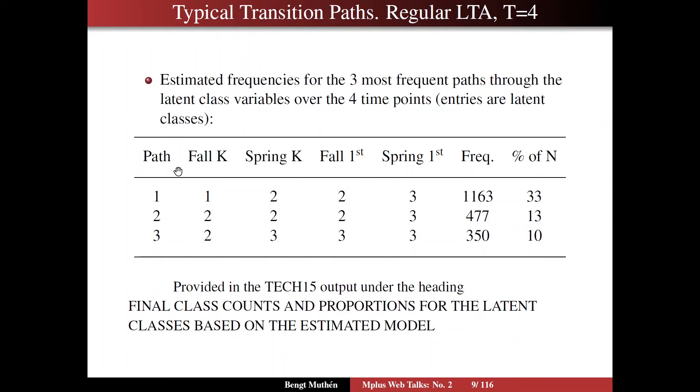The most common transition path is starting in the lowest class in fall of kindergarten and going up to class two in the spring of kindergarten. Then over the summer, not much happens and they stay in class two, whereas they move over to the desirable class three by spring of first grade. 33% follow that pattern. The second most common pattern is that the child starts in class two already in the fall of kindergarten, stays in that class through kindergarten and at the beginning of first grade, and then moves over to class three in the spring of first grade. 13% follow that.